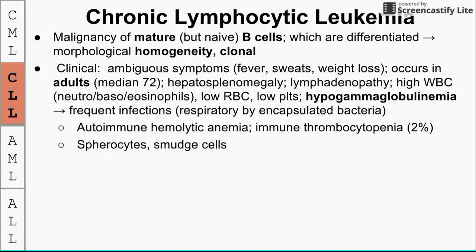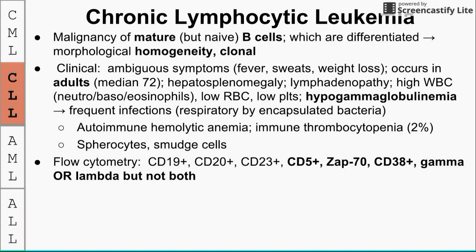On the blood smear we see spherocytes (a normal side effect of AIHA) and smudge cells, which are an artifact due to weakened structural integrity of CLL cells — they get smushed during smearing. On flow cytometry, key positives are CD5+, ZAP70+, CD38+, and either kappa or lambda light chains (not both, since it's clonal). CD5 and ZAP70 are normally found on T cells, making their presence on these B cells diagnostically significant. CD19, CD20, and CD23 are normal B cell markers.